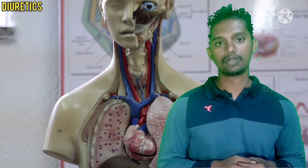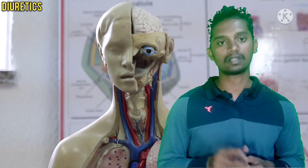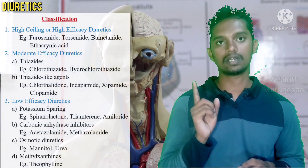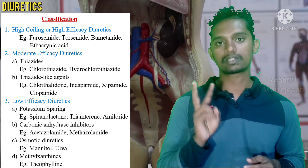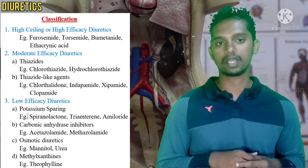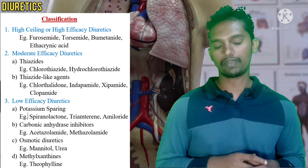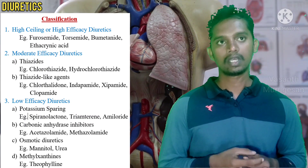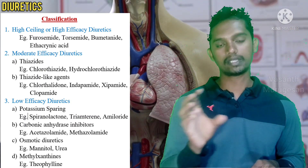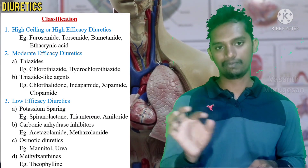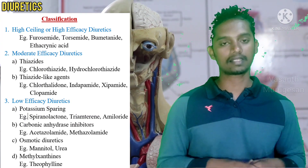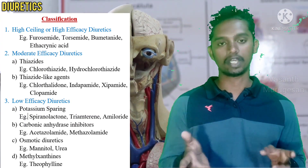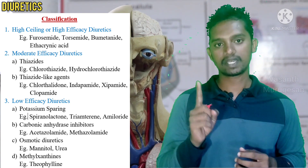Next, the classification of diuretics. There are three major categories: the first one is high ceiling diuretics, also known as loop diuretics; the second one is moderate efficacy diuretics; and the third one is low efficacy diuretics. Within these three major categories there are a few subtopics that collectively construct the classification of diuretics.